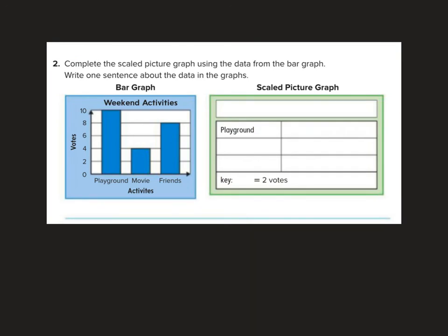Complete the scaled picture graph using the data from the bar graph. Write one sentence. Same directions here. So now I have a bar graph and I'm moving it to a picture graph. What's the title? Weekend activities. Playground. We have the movies. Probably could just do a movie. Not going to be doing that for a while. And playing with friends. So each, let's do hearts. Just because I'm good at hearts here. Don't want to draw something too elaborate. So how many people chose playground? Ten did. So if each heart is two votes, I need to draw five hearts.